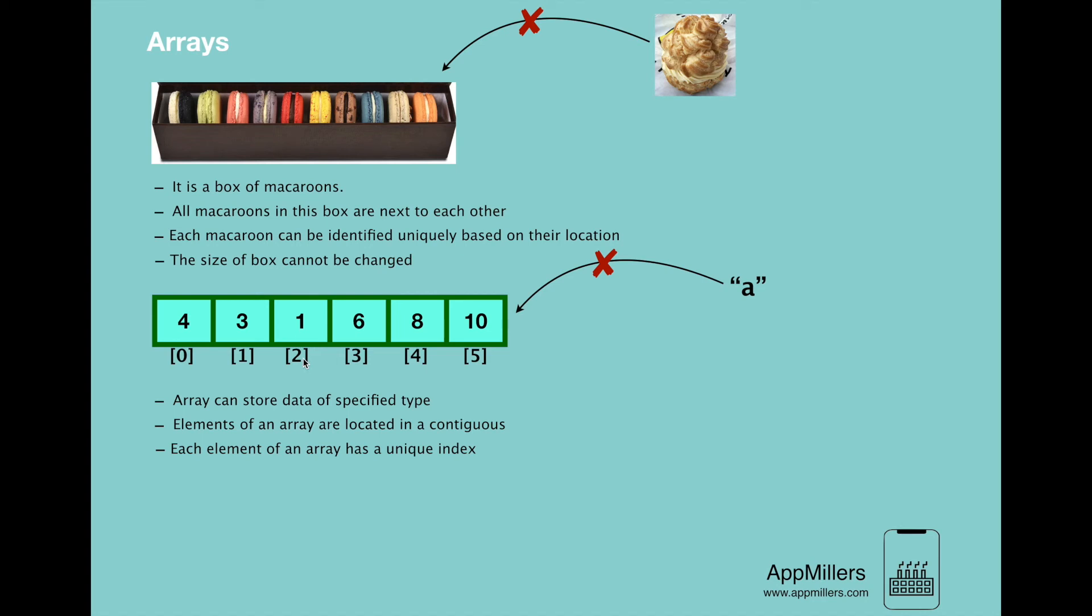And here take into account that indexes start from 0, not from 1, and they increase sequentially. So the last property is the size of array is predefined and cannot be modified.